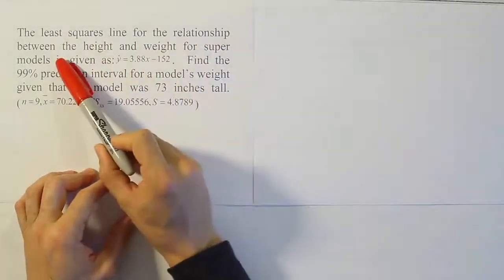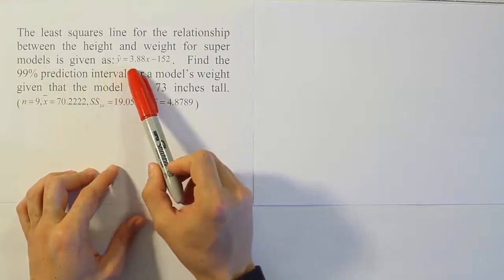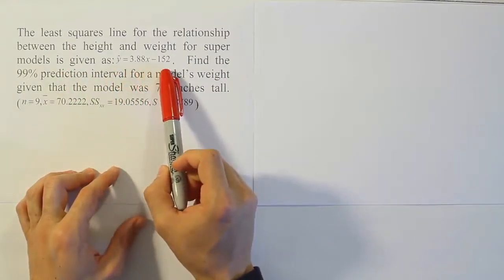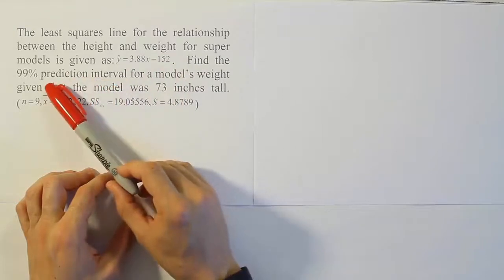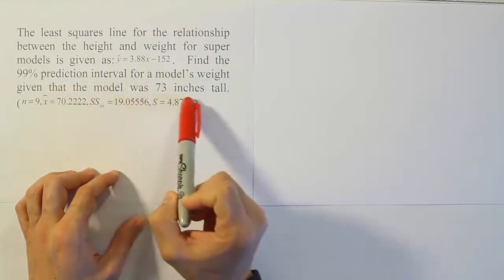The least squares line for the relationship between the height and weight for supermodels is given as y hat equals 3.88x minus 152. Find the 99% prediction interval for a model's weight given that the model was 73 inches tall.